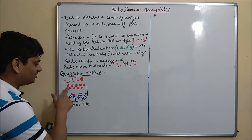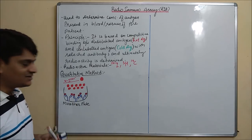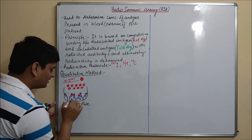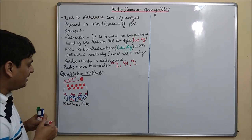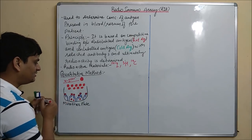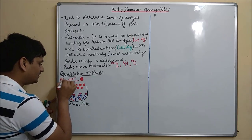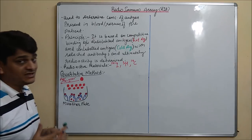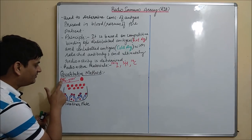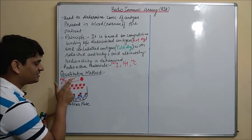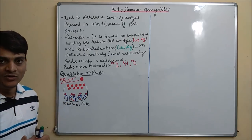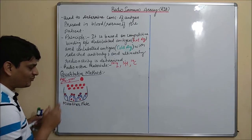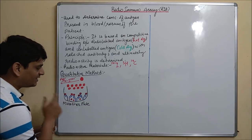This is only for representation — total 9 radiolabeled antigens are there. Remaining antigen will be present in free form, meaning they will not attach with the antibodies. The bond between the antigen and iodine-125 radiolabel substance is covalently bonded, meaning the bond is strong. So this antigen and antibody will bind with each other, and these are radiolabeled.